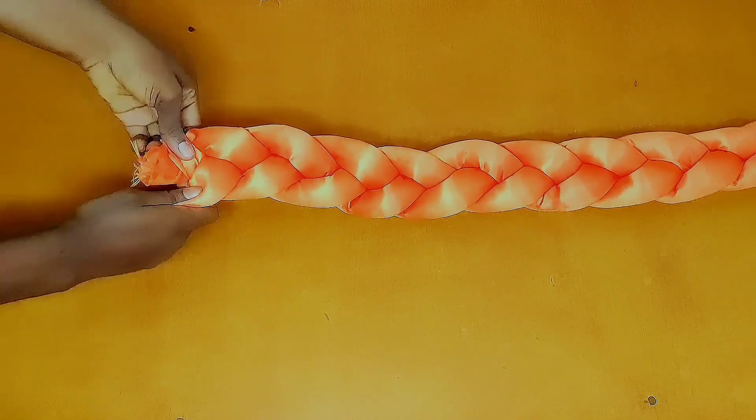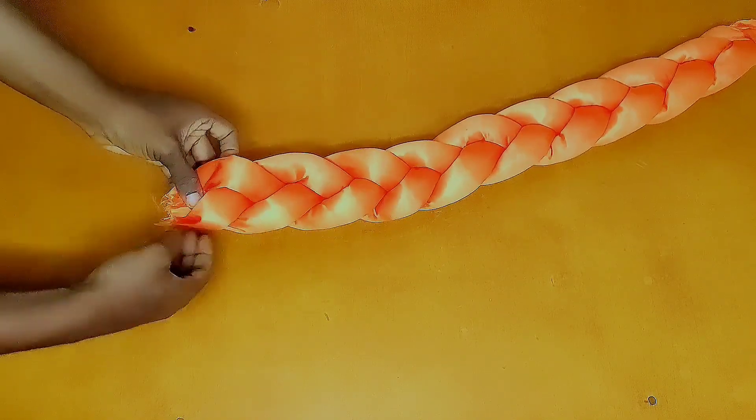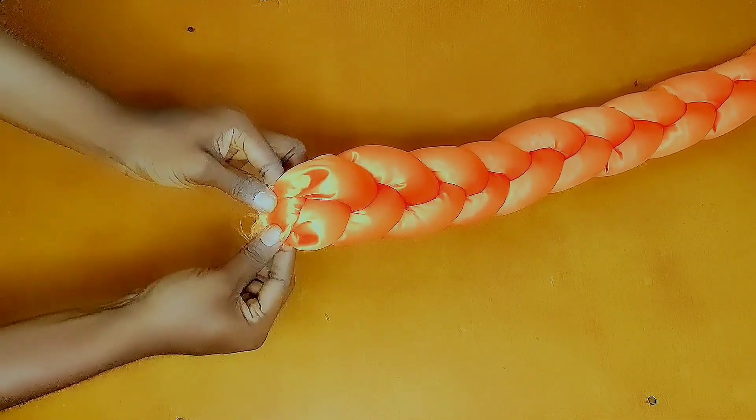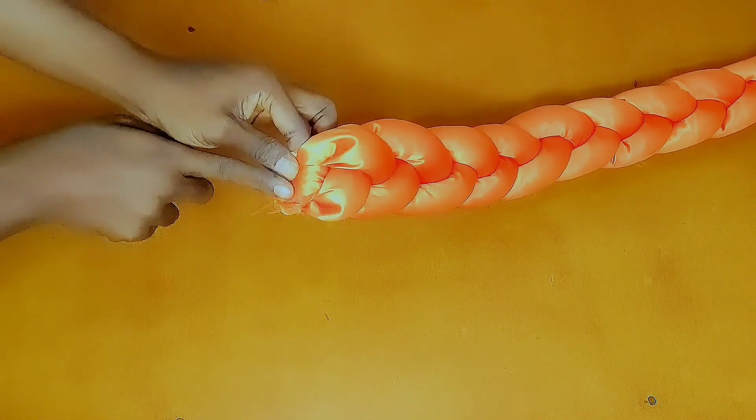Once I'm done, I will place the ends of the three strands together like this. I will go ahead and stitch them together by a half inch seam allowance.